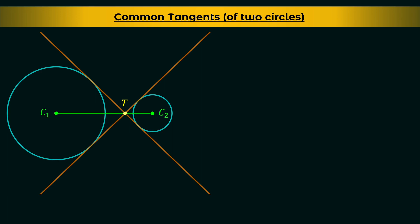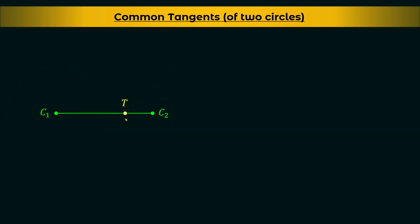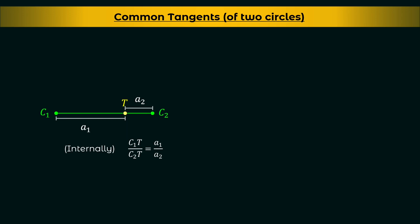Now let's consider the transverse common tangents. Once again consider the centers and the point of intersection of transverse common tangents T on a straight line. Here you will observe that T divides C1C2 internally — because T is in between the points C1 and C2 — also in the ratio A1 : A2, that is C1T / C2T = A1 / A2.